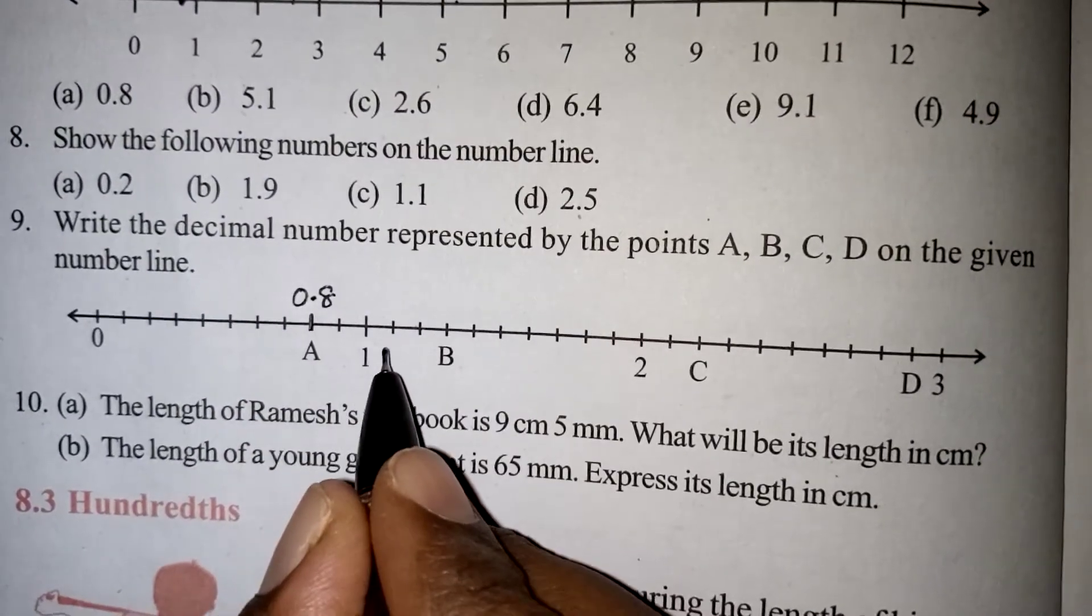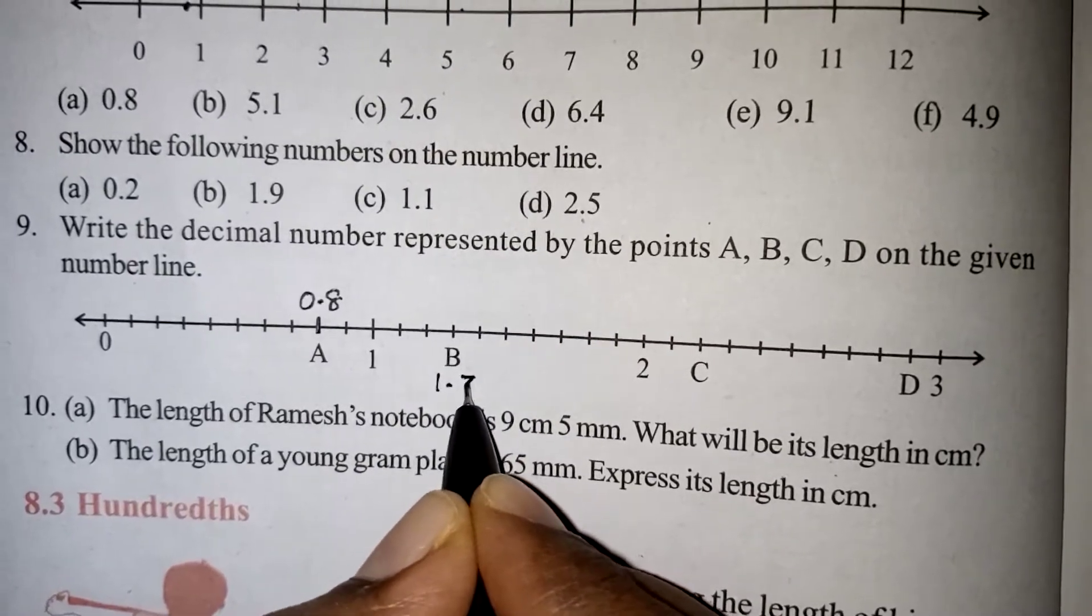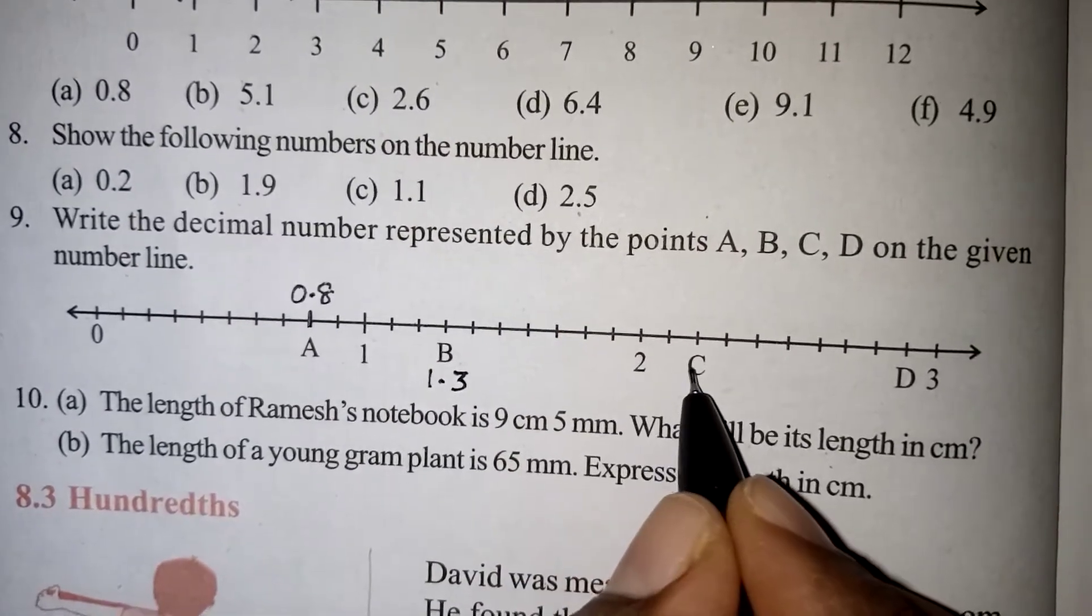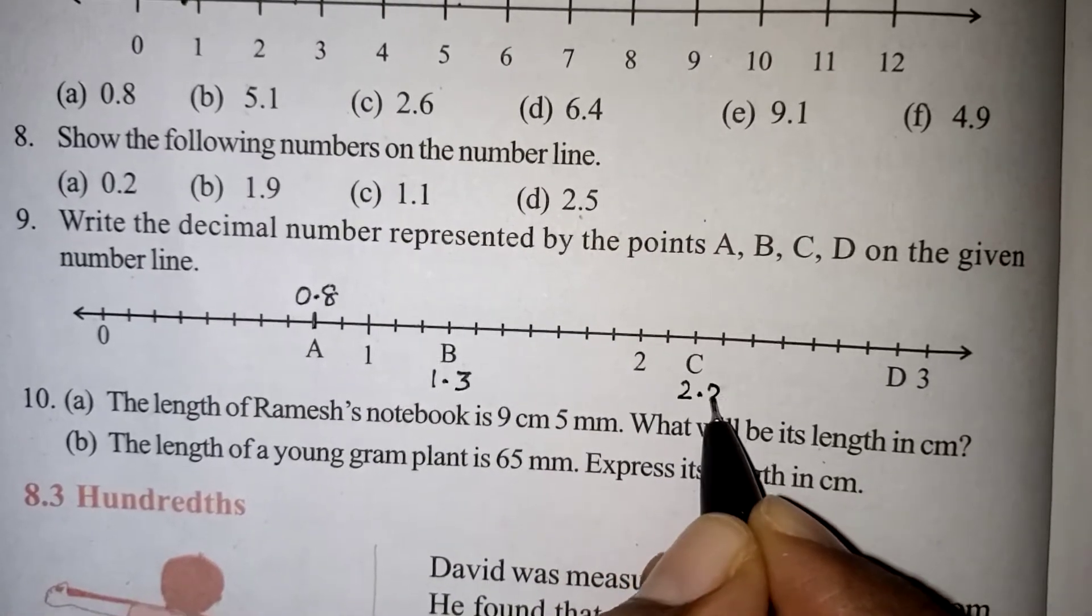Here B, after 1, we have 1.1, 1.2, B will be 1.3. Now here, after 2, C is coming. After 2, first number will be 2.1, C will be 2.2.